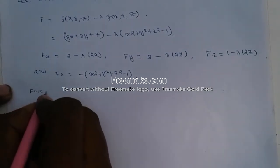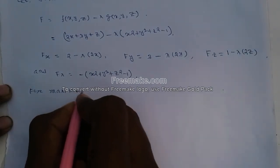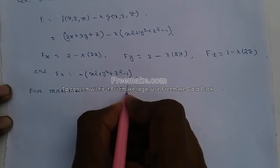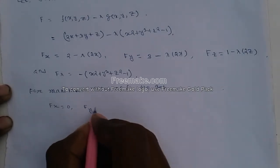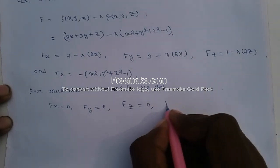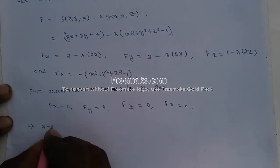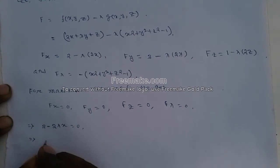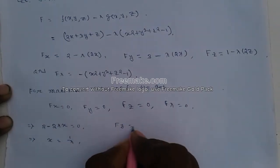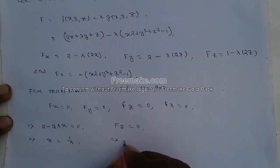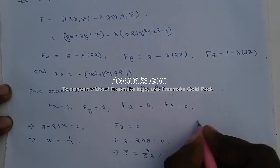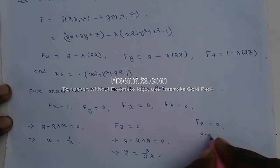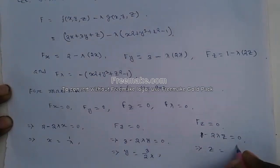Setting each partial derivative equal to zero: Fx = 0 gives x = 1/lambda; Fy = 0 gives y = 3/(2 lambda); and Fz = 0 gives z = 1/(2 lambda).